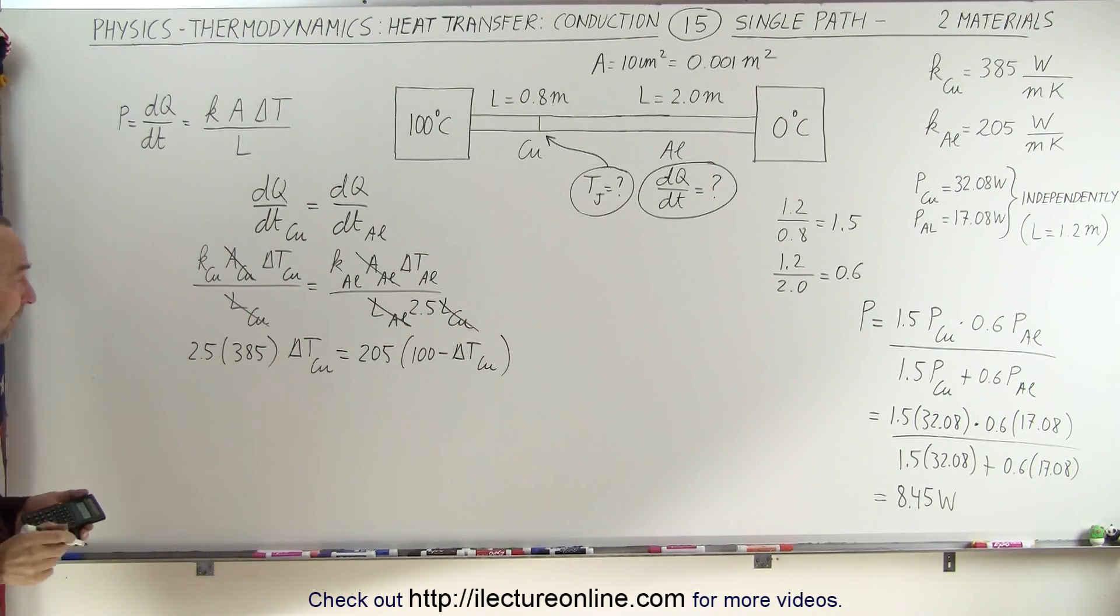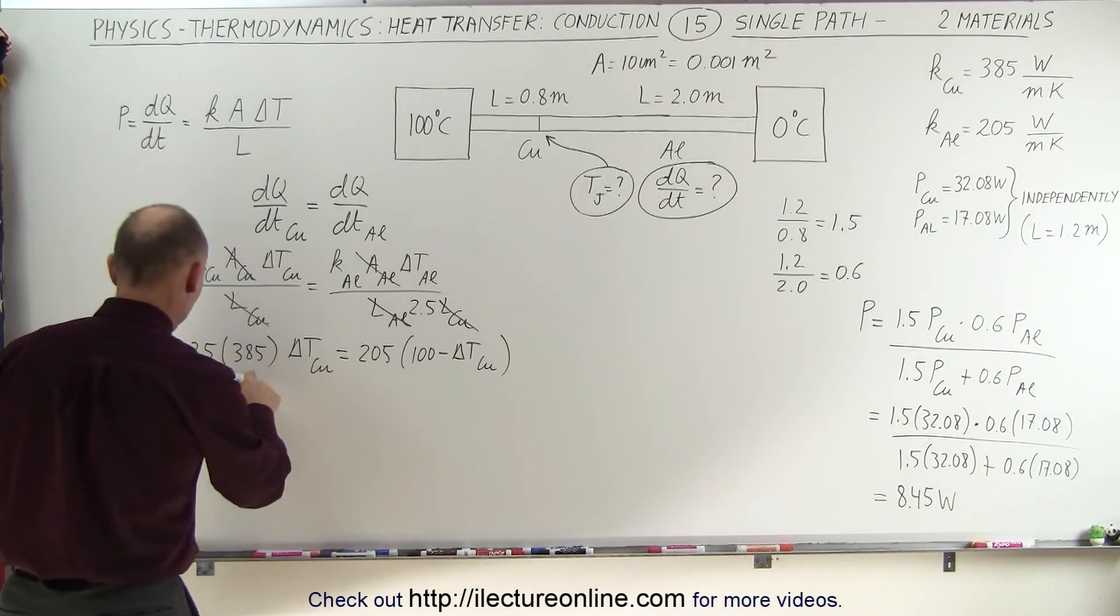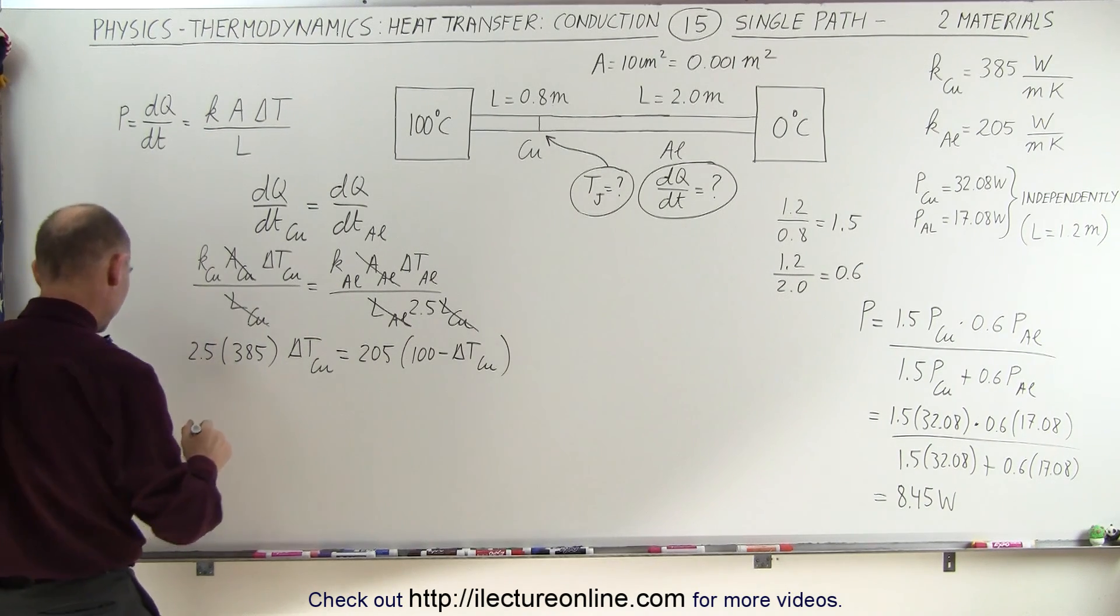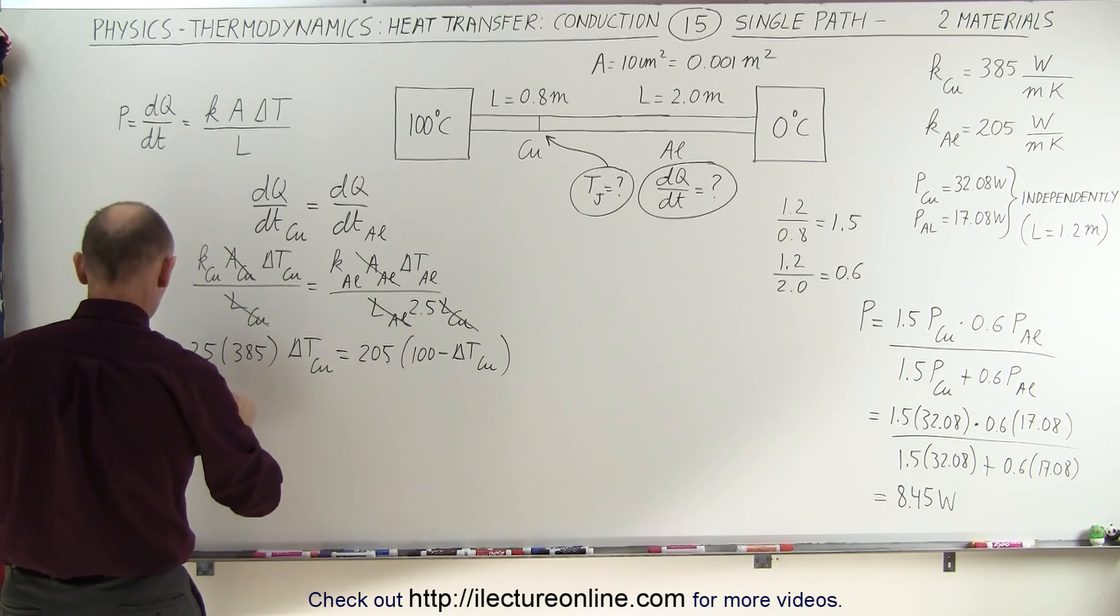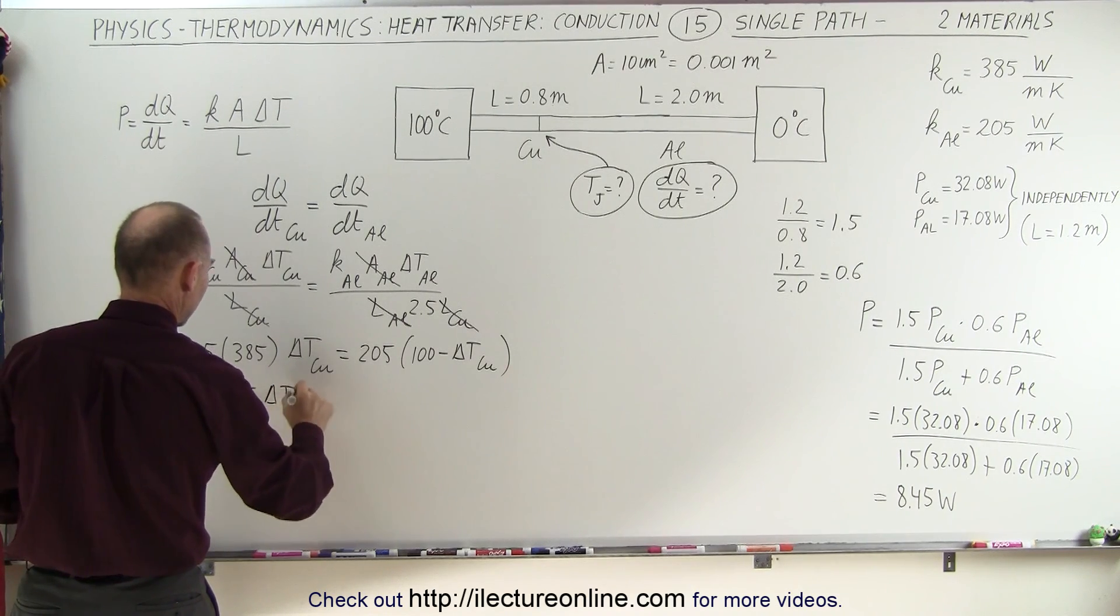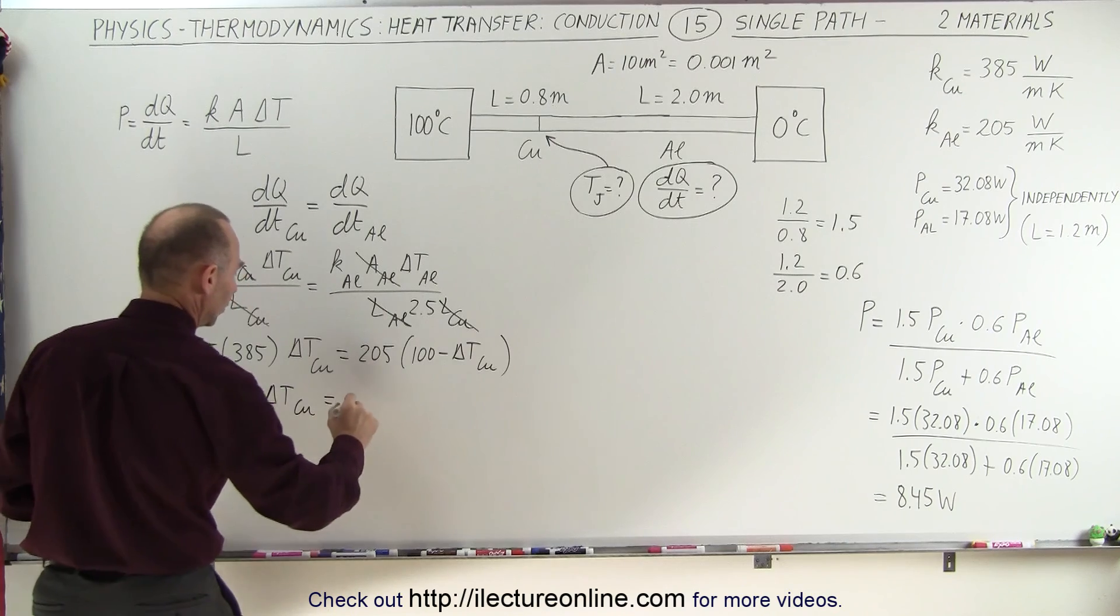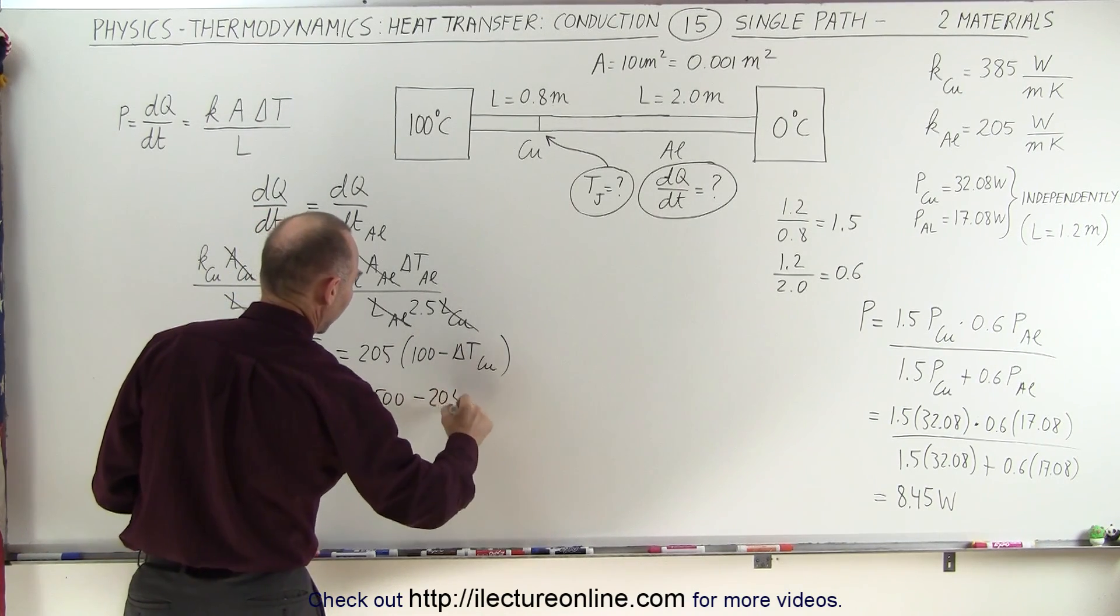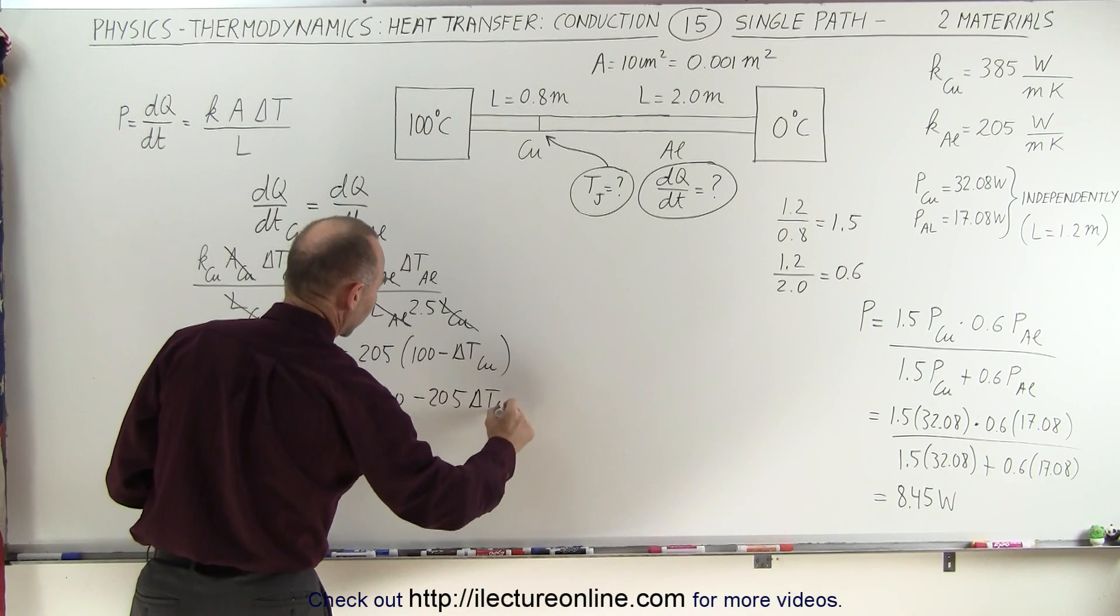Now we only have one unknown in here, so we'll solve for that. But first we have 385 times 2.5, so we get 962.5 times the delta T of the copper is equal to 20,500 minus 205 times the delta T of the copper.